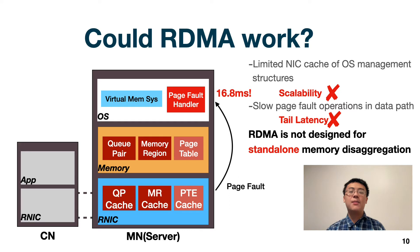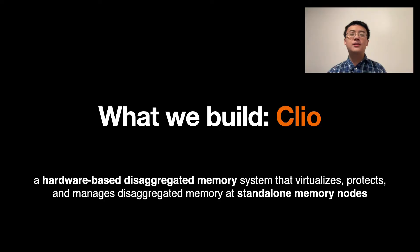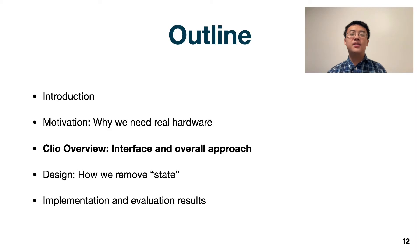The root cause of the poor scalability and performance is that RDMA was not designed for standalone memory disaggregation. As servers fail to support memory disaggregation, it's time to build real hardware. Our answer is Clio — a hardware-based disaggregated memory system that virtualizes, protects, and manages disaggregated memory on standalone memory nodes.